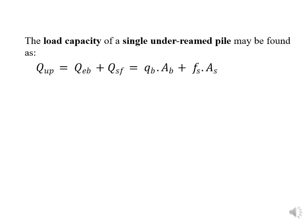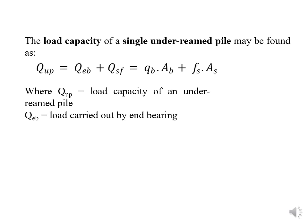We can see how to calculate the load capacity of a single underreamed pile. In 5th semester we discussed the load carrying capacity of piles, including pile load tests, dynamic formula, and static formula. This is just like the static formula. QP is the load capacity of an underreamed pile, QE is the load carried by end bearing at the bottom of the pile, and QS is the load carried by skin friction.